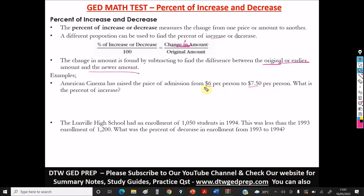So the earlier amount, the original amount is what, $6, while the newer amount is what, $7.50.